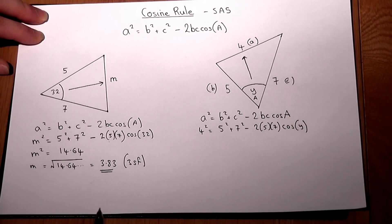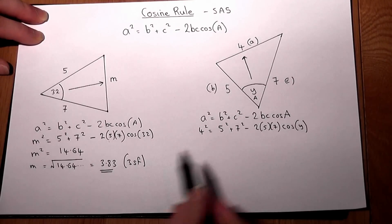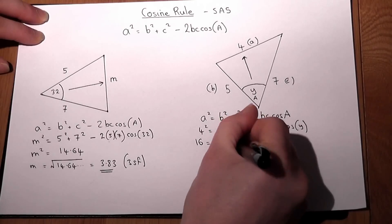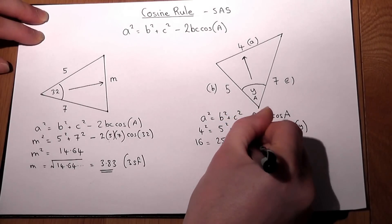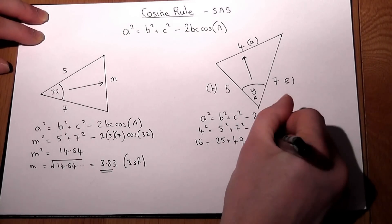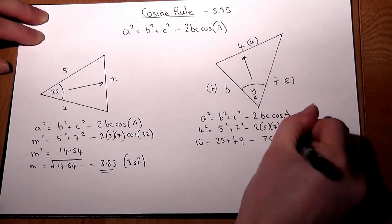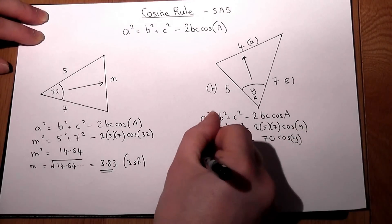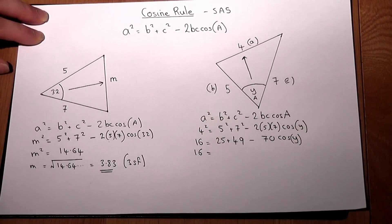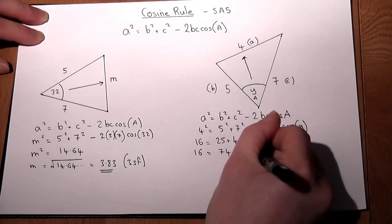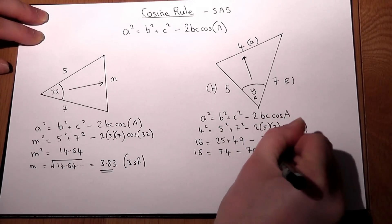The trick here is to be able to rearrange this formula, and it's not too tough to do. We work out the squared parts first and get 16 equals 25 plus 49 minus two times five times seven, which is 70 cos of Y. Adding those together we get 16 equals 74 take away 70 cos of Y.